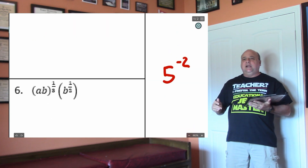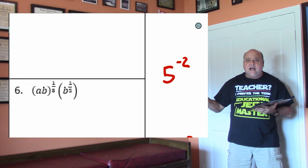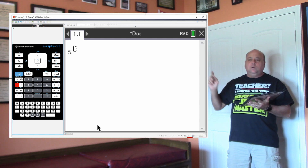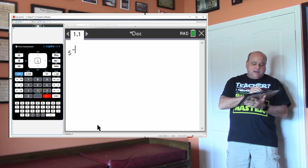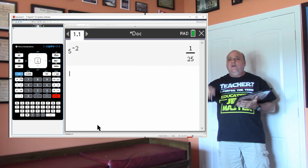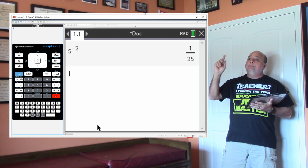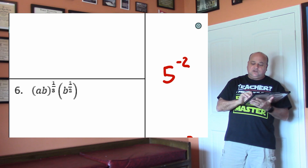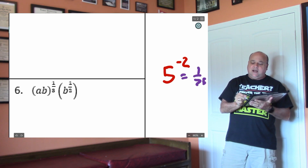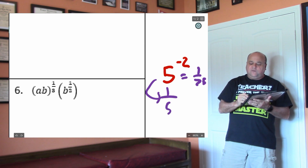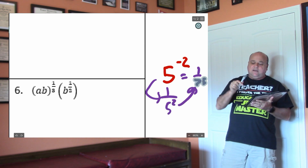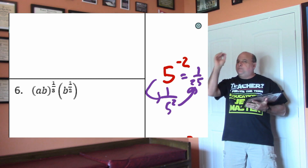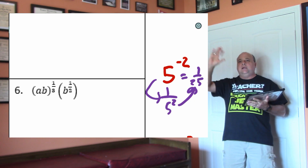Let's go to 5 to the negative 2. Type this into the calculator — it is not negative. If I go to the calculator and hit 5, then hit the caret button, which is all the way to the left of the 4, then type in negative 2, I'm going to get 1 over 25. 5 to the second power is 25, but the 25 should not be in the numerator — it should be in the denominator. The negative exponent does not make the answer negative. It moves the base across the fraction bar.